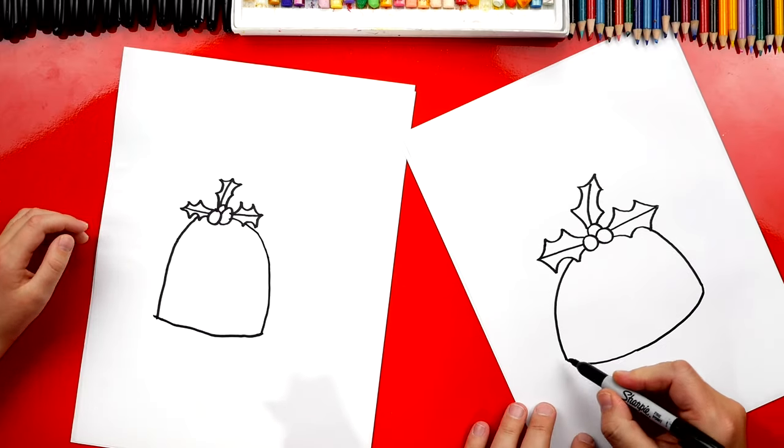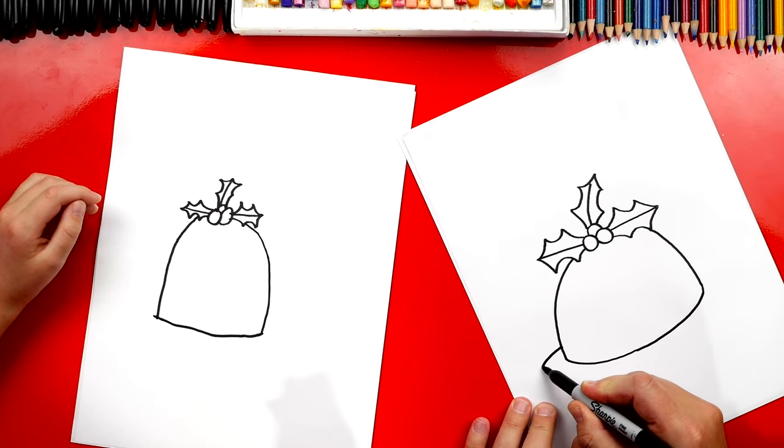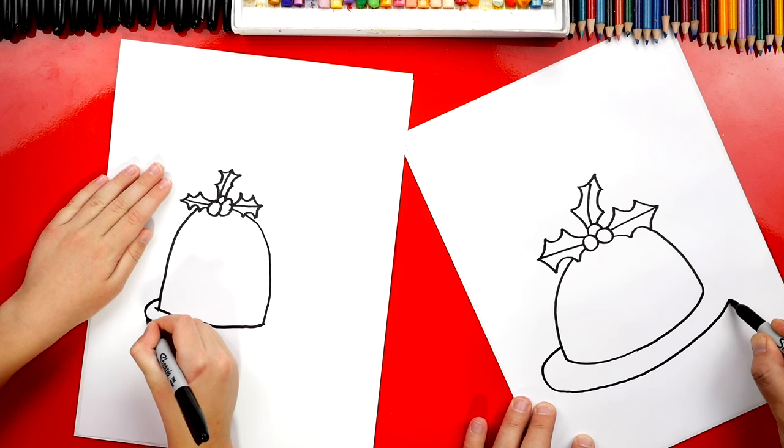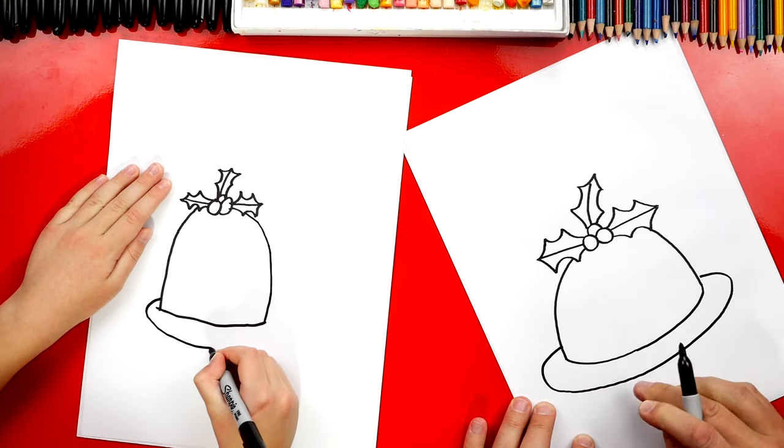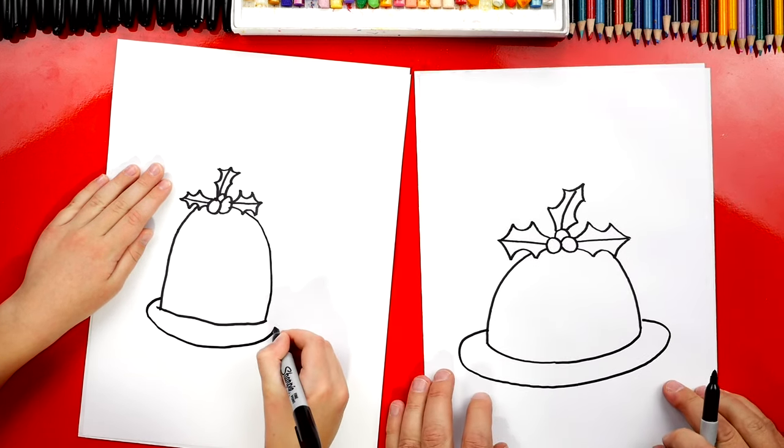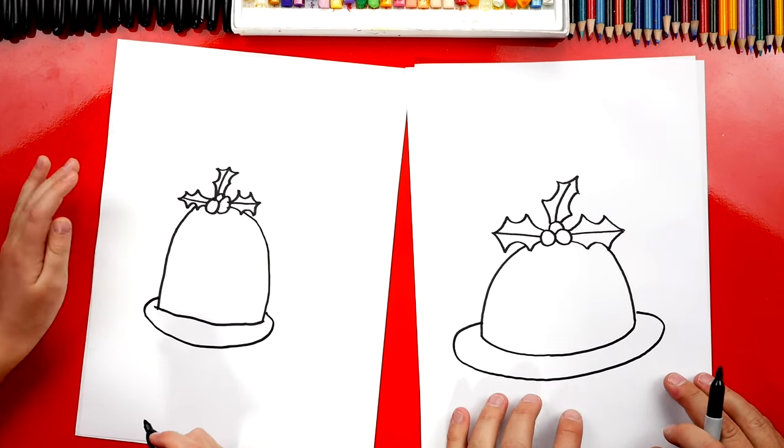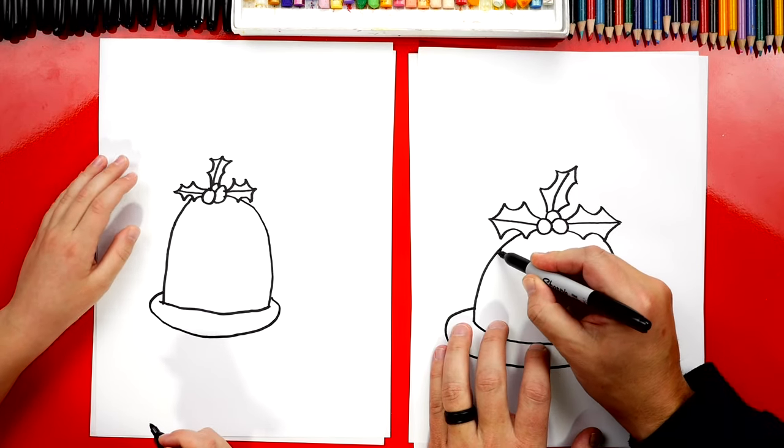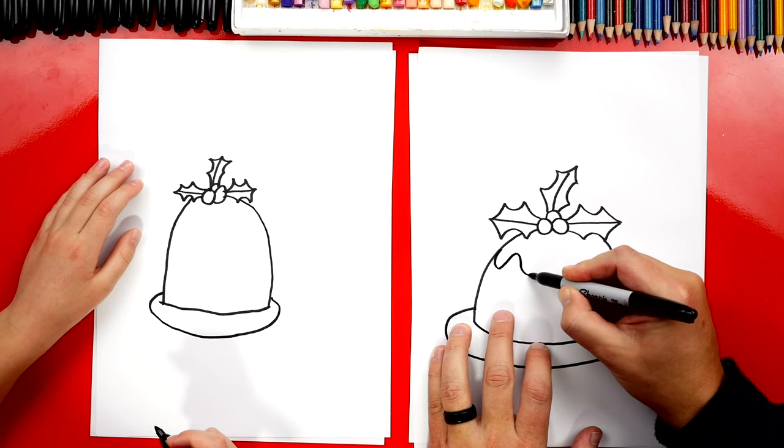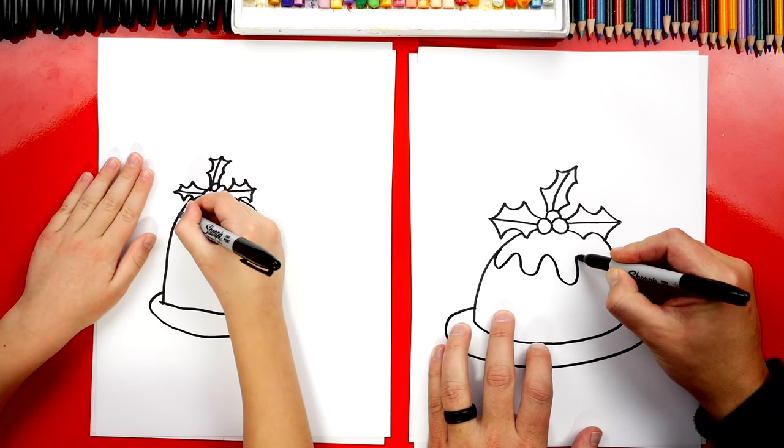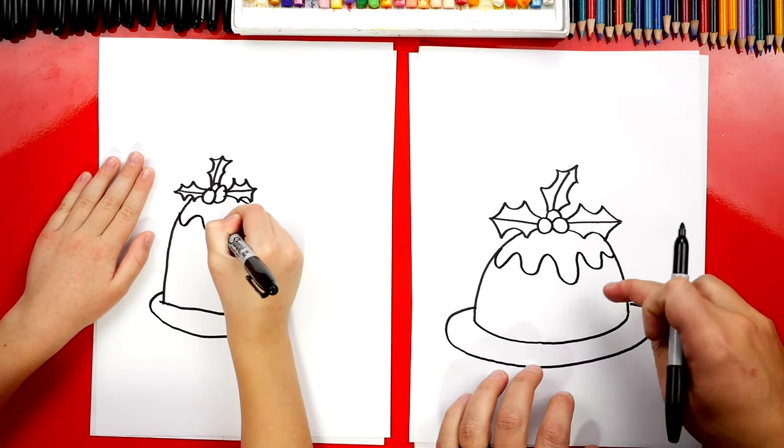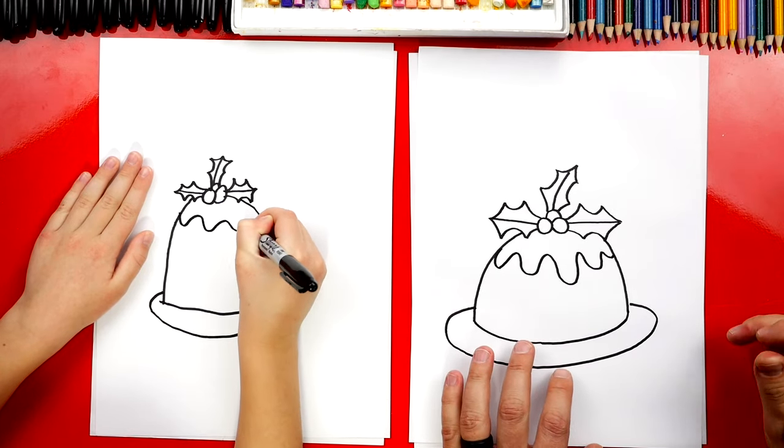Well we're gonna put it on a plate instead of on the ground. I'm gonna draw a curve that comes out like this. I'm matching the curve at the bottom of the figgy pudding. Now it's sitting on a plate. Next we're gonna draw the delicious sauce on top. We're gonna draw a wavy line. Now I'm gonna draw wavy lines that don't go all the way down because we want to leave room for the funny face that we're gonna draw.